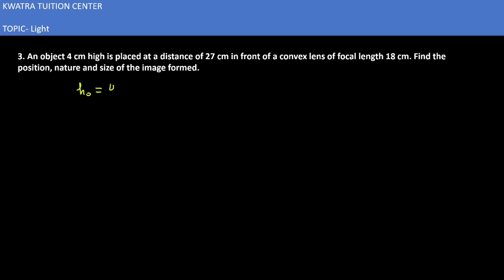So in this case what is there? H₀ is 4cm, u is minus 27cm, and f is 18cm. So these three things we have.